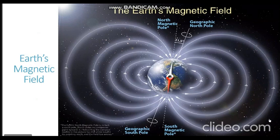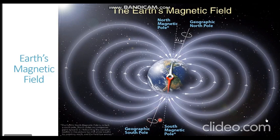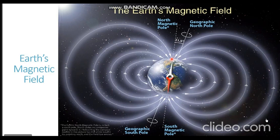Looking at the earth's magnetic field in another diagram: the geographic north pole is where the solid white line — the axis of rotation — meets the surface. The magnetic poles point in a different direction, denoted by the dotted line. The end which points close to the geographic north pole is called the north magnetic pole, and the end close to the geographic south pole is known as the south magnetic pole.